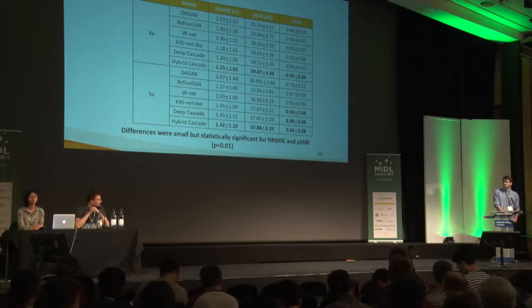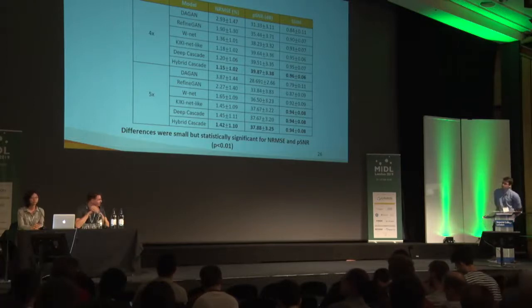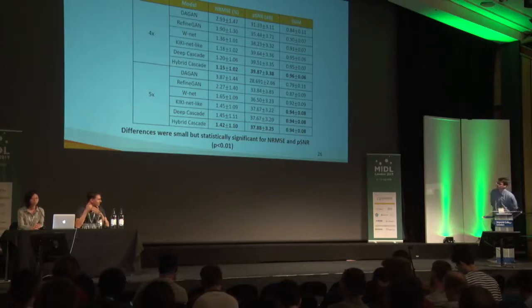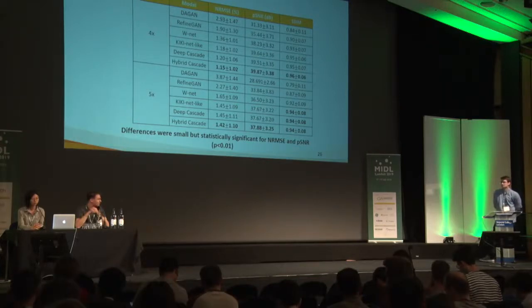Question: You have 3D k-space and image data but apply the inverse Fourier transform along one axis to get a 2D problem — is there a specific reason for that or is it just computational? Response: It's mostly computational. Also, in the readout direction you cannot meaningfully undersample, so you can just take the inverse Fourier transform there without losing any information. The problem then becomes much more manageable — you don't lose information and it's the best way to go.